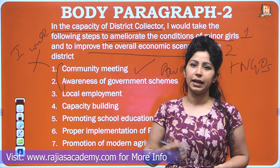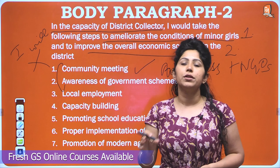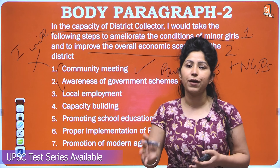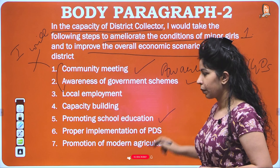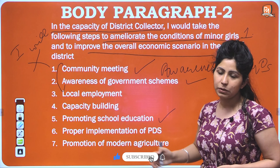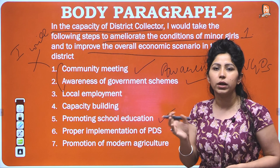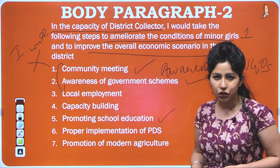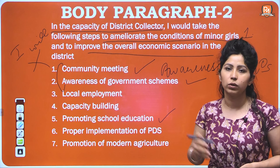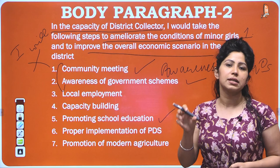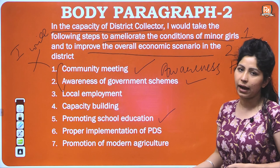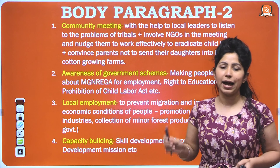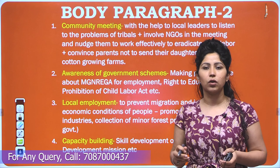Even if there is a BT cotton farm nearby, local youth can be skilled to work in farm-based industries. The fourth step is promoting school education — provide midday meals through the Midday Meal Scheme to maintain nutritional levels, and improve school infrastructure. The fifth step is proper implementation of PDS — when people have enough food grains to sustain their livelihood, they will not send their children to hazardous occupations. The sixth step is promotion of modern agriculture — since available land is small, use land pooling, high-yielding variety seeds, and precision agriculture techniques.